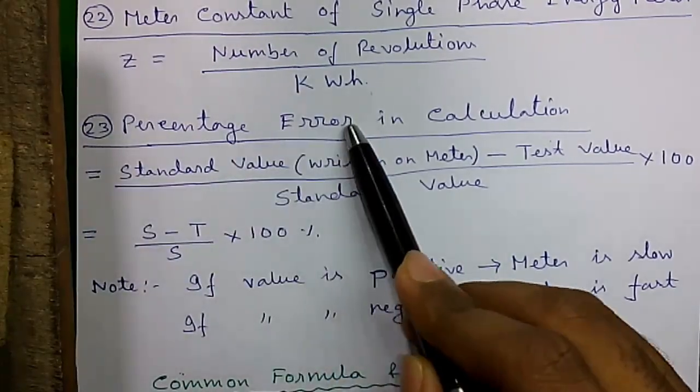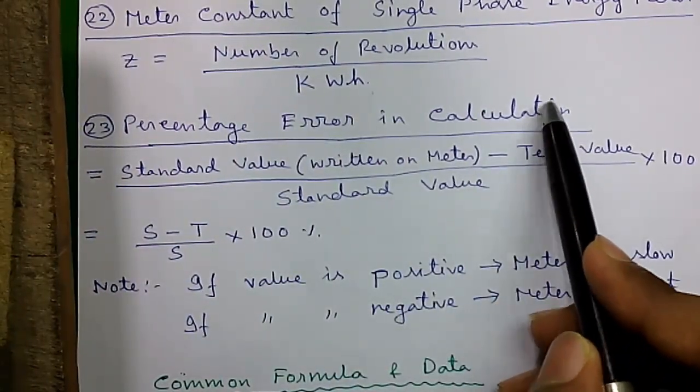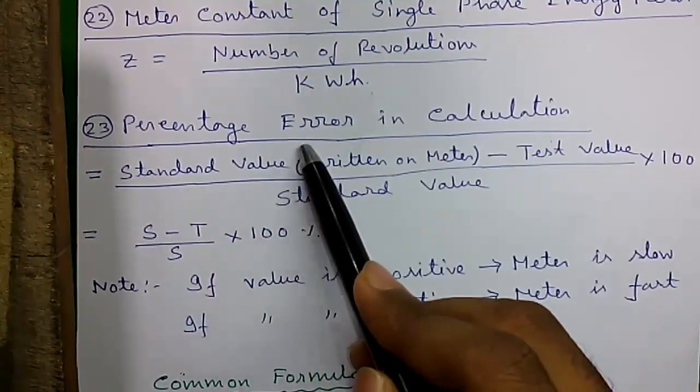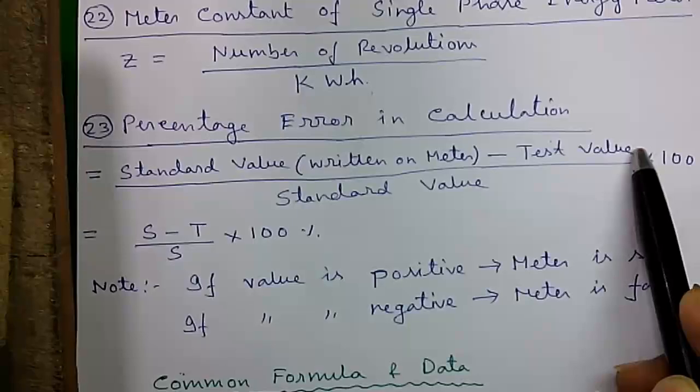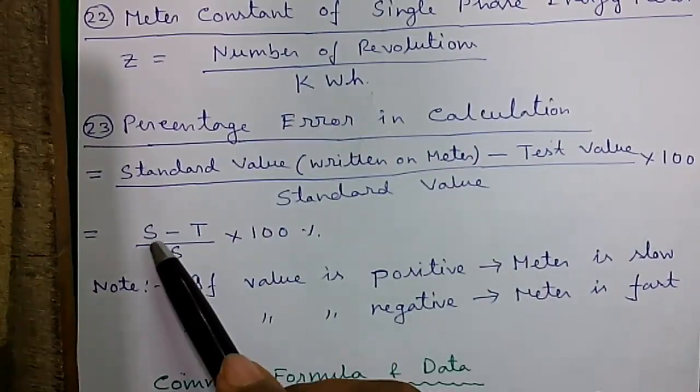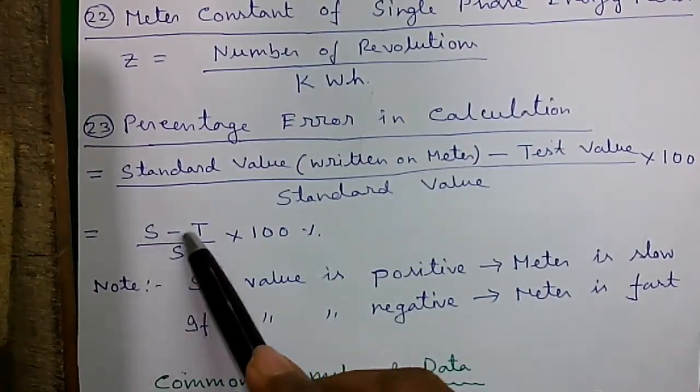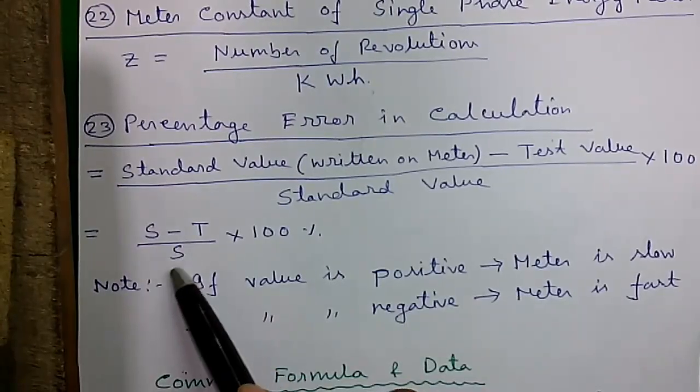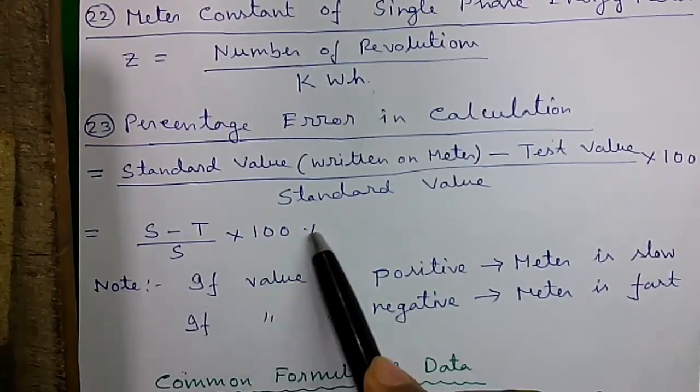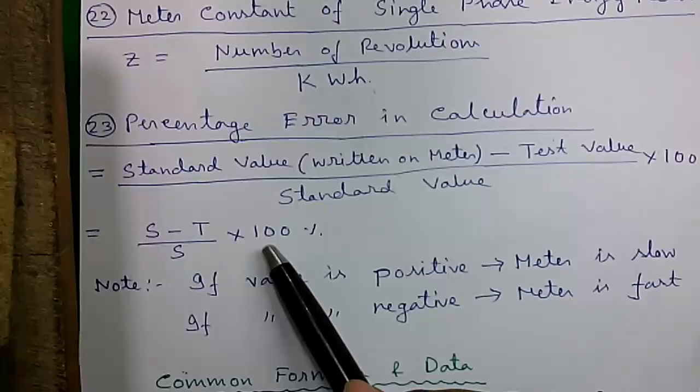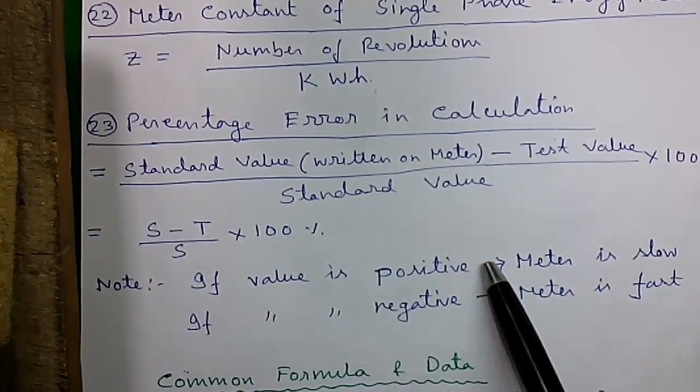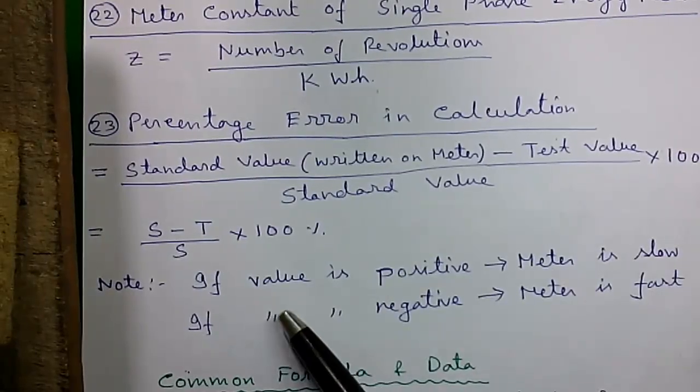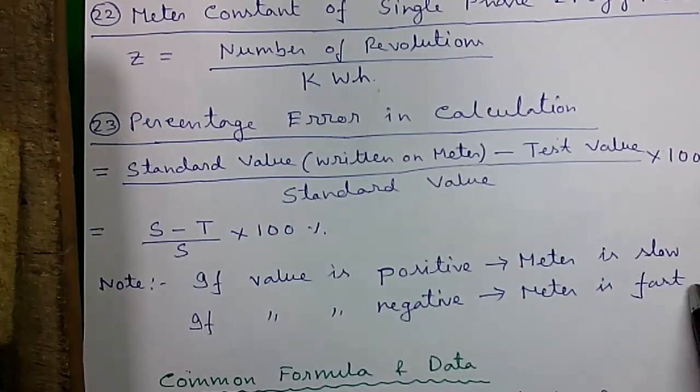Formula 23: Percentage error in the above calculation equals standard value, which is written on the meter, minus test value, divided by the standard value into 100%. After doing the calculation, if the value is positive, then meter is running slow, and if the value is negative, the meter is running fast.